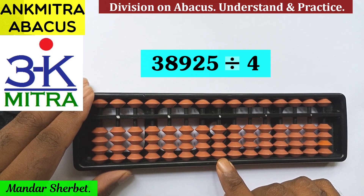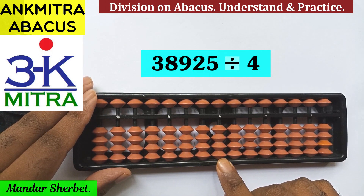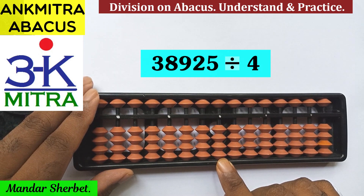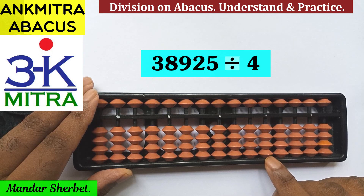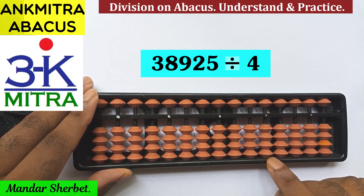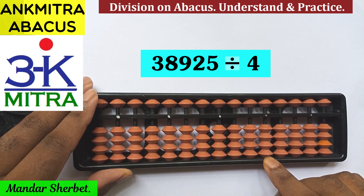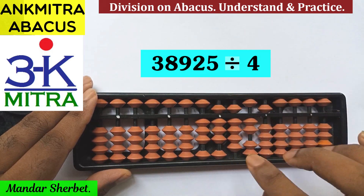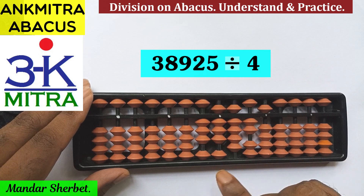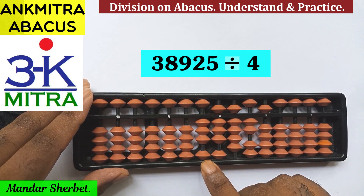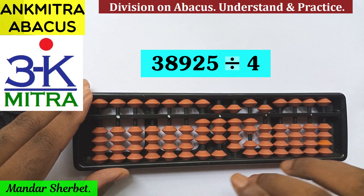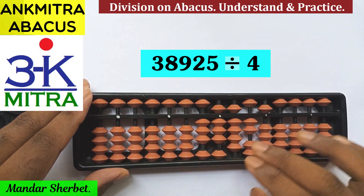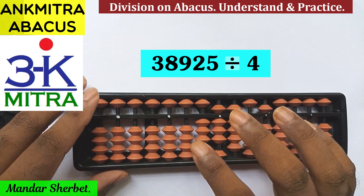We need to set up the units place for both the answer and the question set on the abacus. The 5-digit number 38925 is placed so that its units digit ends on the designated units rod. It doesn't matter if it overflows into the answer section, because as we progress the initial digits will vanish and space will appear for the answer.